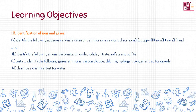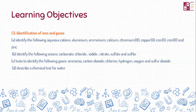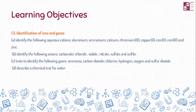The learning objectives for today's class are that we are going to identify the following aqueous cations, and we are also going to identify the anions. The cations include aluminum, ammonium, calcium, chromium-3, copper-2, iron-2, iron-3, and zinc. We are also going to identify the following anions: carbonates, chlorides, iodides, nitrates, sulfates, and sulfides. We are also going to test how we can identify the following gases: ammonia, carbon dioxide, chlorine, hydrogen, oxygen, and sulfur dioxide.